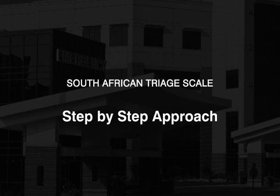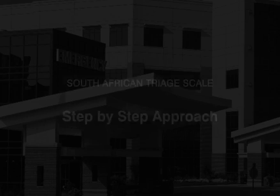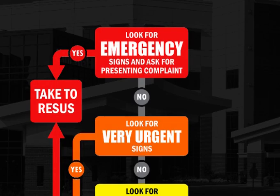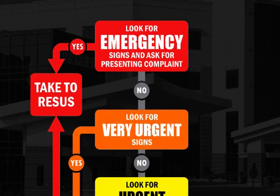The step-by-step approach consists of a few simple steps. Firstly, look for emergency signs and ask for the presenting complaint. This may take place in the waiting room already as you go through the queue of patients. If an emergency sign is found, the patient is taken straight to recess without further delay.